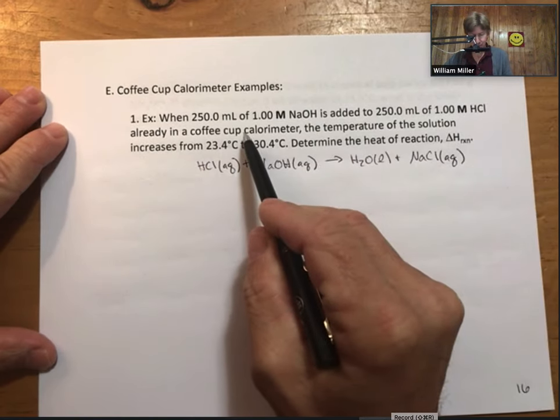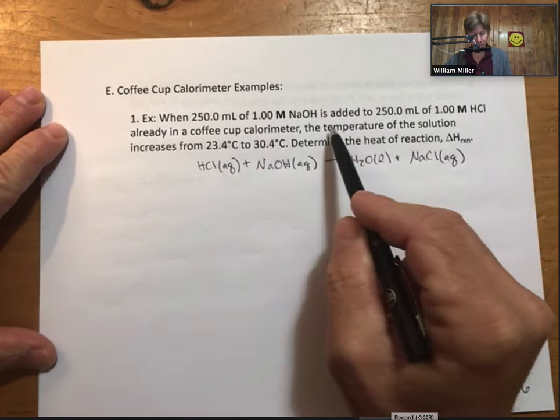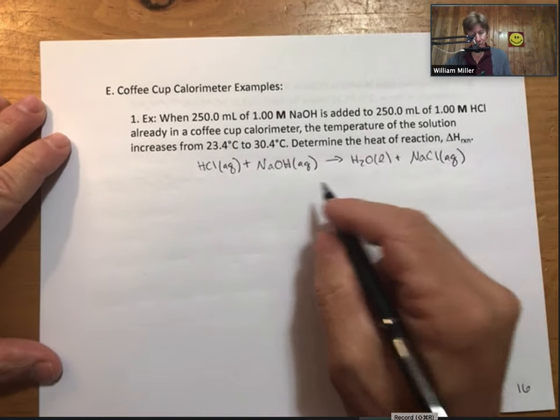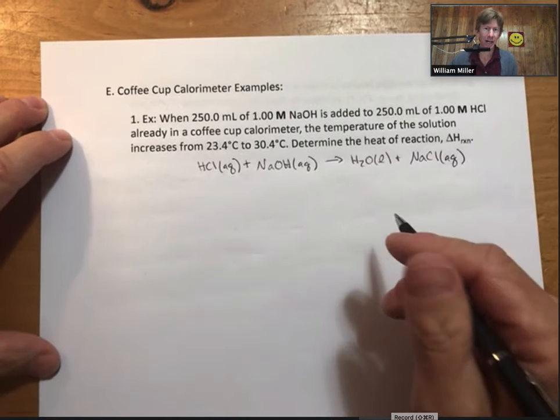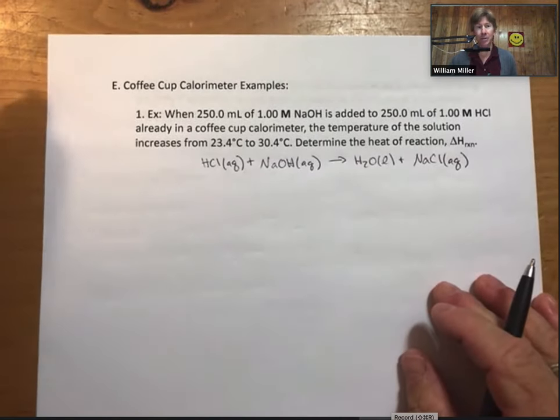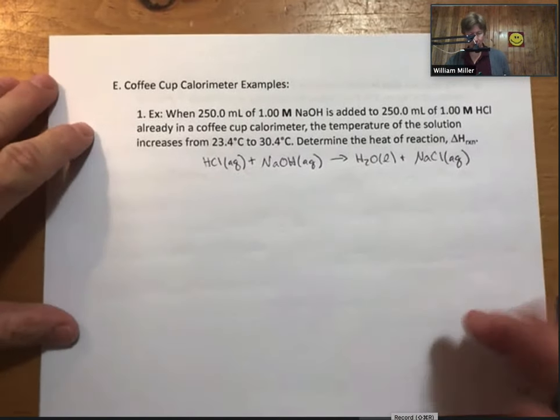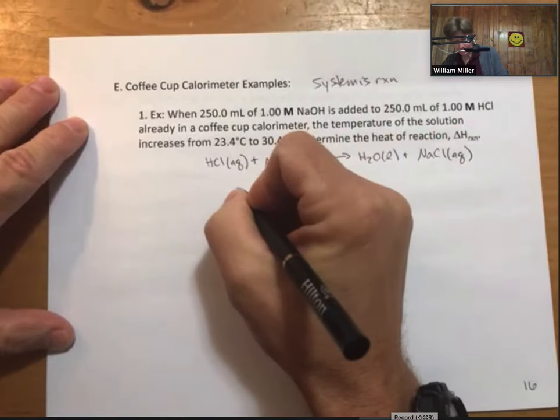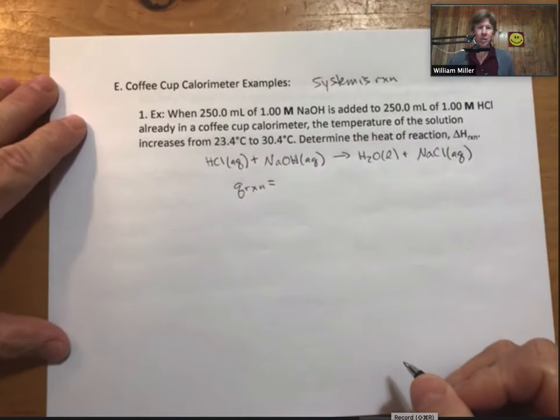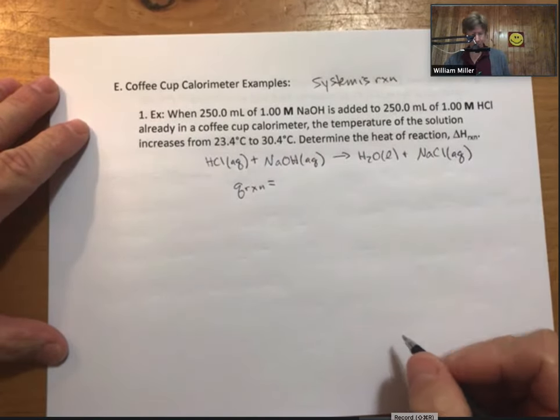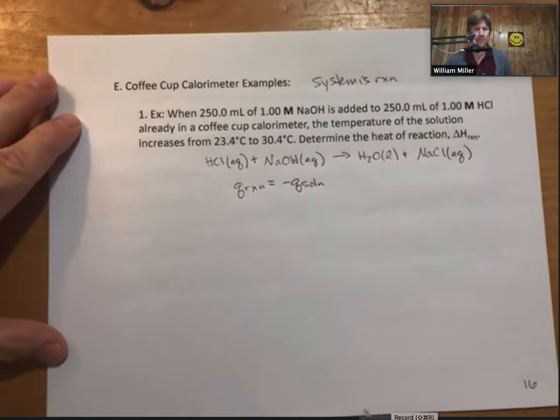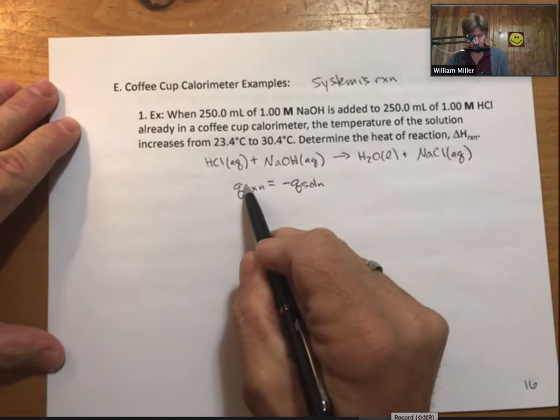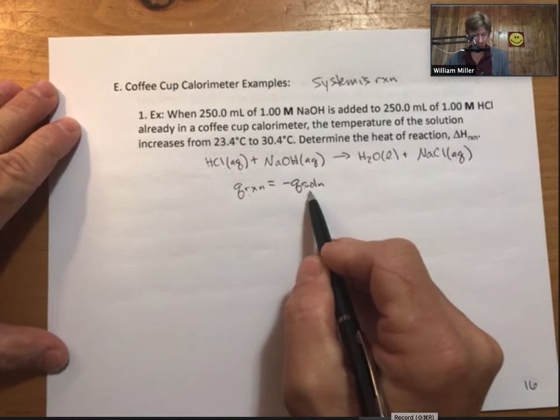We have volume and molarity of sodium hydroxide, same information for hydrochloric acid. We mix them together in a coffee cup calorimeter. We find the temperature of the solution increases from 23.4 to 30.4 degrees. Determine the heat of reaction. Coffee cup calorimeter equations: q reaction equals minus q solution. Since we're finding delta H reaction, we're going to work on the q reaction part second. We'll solve q solution first.